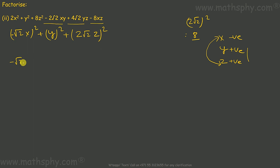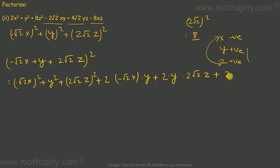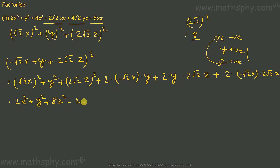Expanding (-√2·x + y + 2√2·z)²: (-√2·x)² gives +2x²; y² gives y²; (2√2·z)² gives 8z². For the cross terms: 2·(-√2·x)·y gives -2√2·xy; 2·y·(2√2·z) gives +4√2·yz; 2·(-√2·x)·(2√2·z): 2·2 = 4, √2·√2 = 2, so 4·2 = 8, giving -8xz.